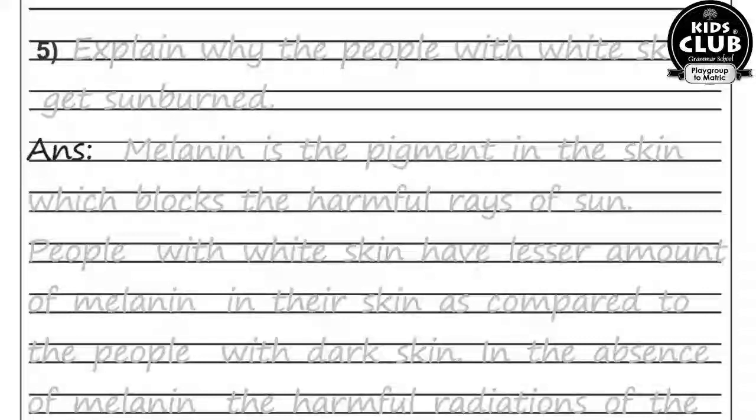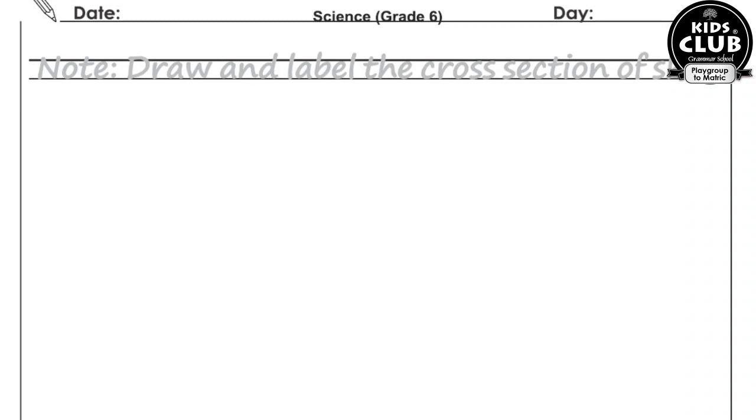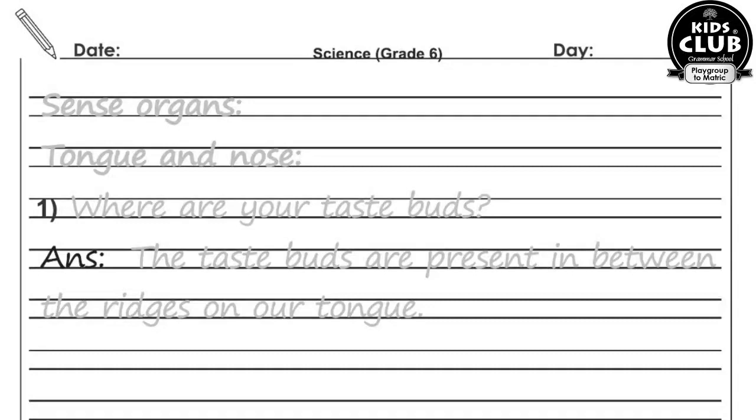Question number five: Explain why people with white skin get sunburned more easily. Melanin is a pigment in the skin which blocks the harmful rays of the sun. People with white skin have a lesser amount of melanin compared to people with dark skin. In the absence of melanin, the harmful radiations of the sun can easily damage the skin. Draw and label the cross-section of skin from the science book.